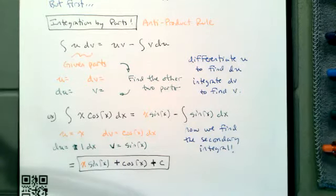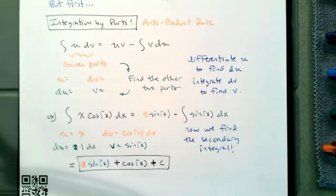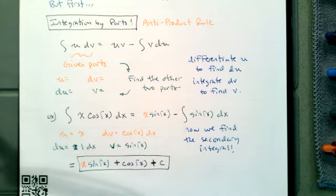If you're thinking this seems super easy, well, this is the first example — it gets worse. Some things to keep in mind: we're trying to get to the secondary integral, and the secondary integral should be easier than what you started with. One of the things we have to learn is that we don't want to make things worse. As newcomers to integration by parts, everything looks bad, so we have to develop a sense of what 'worse' means.